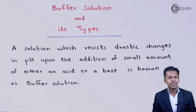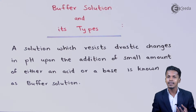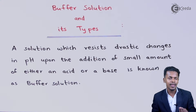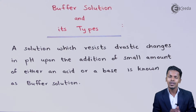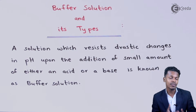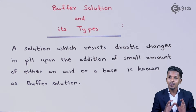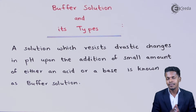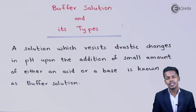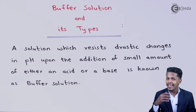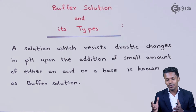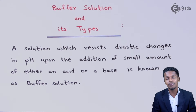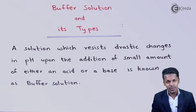So as mentioned, even upon adding an acid or a base, the pH of the solution — whether it is acidic or basic — would be maintained and prevented from drastic change. That is what we are going to talk about: the types of buffer solution.